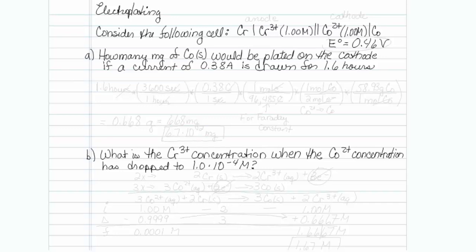This is how to work an electroplating problem. Consider the following cell: it involves chromium and chromium 3+ in the anode compartment, and cobalt 2+ and cobalt in the cathode compartment, with a standard state cell potential of +0.46 volts. Some electroplating has positive voltages, some has negative. So this is a spontaneous electroplating.